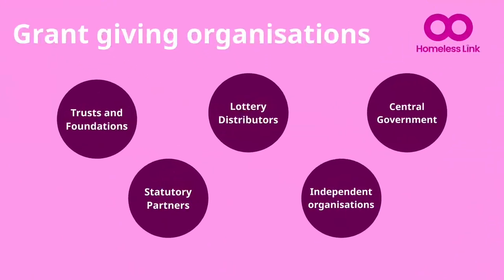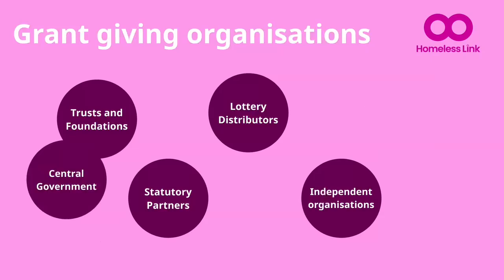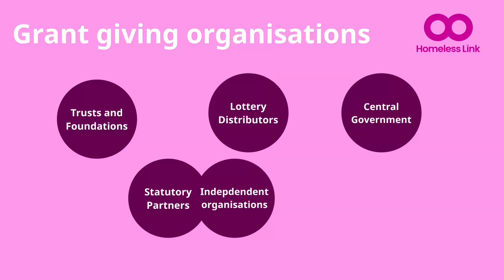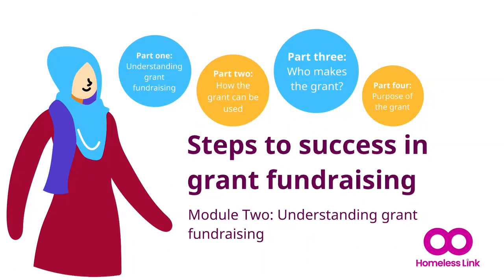Whilst these are the five main funders, they will often collaborate, and understanding the real source of income might help you better understand expectations and likely conditions. For example, central government might partner with trusts and foundations to distribute a fund — Phase 1 of the Youth Investment Fund was a partnership between BBC Children in Need and the Department for Culture, Media and Sport. Central government will partner with lottery distributors — the Arts Council will deliver the Thriving Communities funding on behalf of the Department of Health and Social Care. Statutory partners will also partner with other independent organisations, for example, Integrated Care Boards are distributing local NHS grants via community foundations in some locations. Understanding where the grant is coming from will help you better understand what conditions might be attached and whether it is a good fit for your charity.